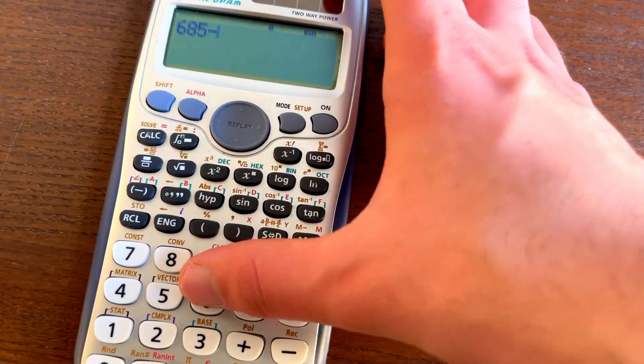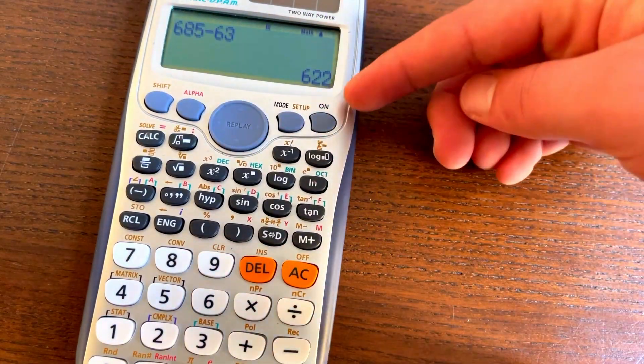So a really nice thing to do is to store different values for later. So for example, if we had some random equation, we had this number, 622.